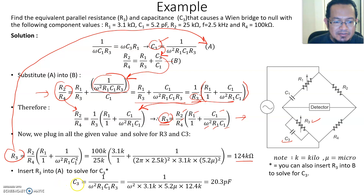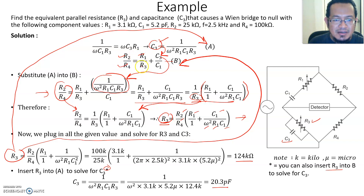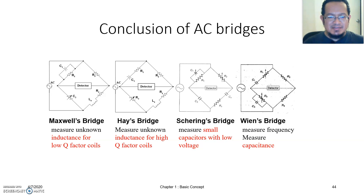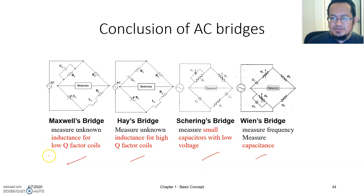The result is that C3 equals 20.3 picofarads. Note that you can also insert R3 back into equation B instead of equation A to solve for C3, since R2, R4, R1, R3, and C1 are all known — either way should give the same answer. We are now arriving at the end of Chapter 6. As a review, we have covered all four types of AC bridges: Maxwell bridge, Hay bridge, Schering's bridge, and Wien's bridge. Make sure to study and understand all these bridge types, how the equations are derived, and the examples given in the slides and videos.